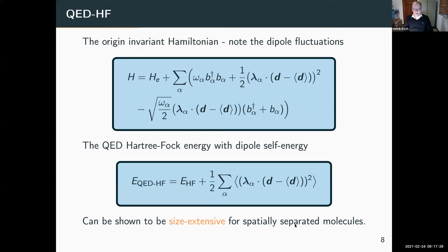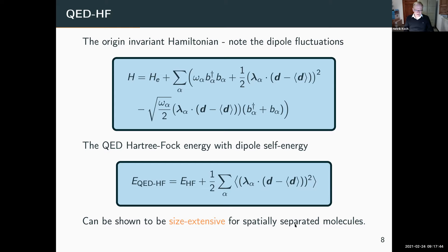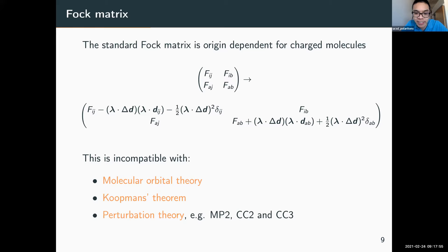Once we've defined the Hartree-Fock energy, we normally proceed to define a molecular orbital theory as a zero-order entry model. There is a question in the chat from Eric Fisher: does the QED Hartree-Fock Hamiltonian depend on the reference structure of the molecule through the nuclear contribution of the dipole moment? No — this is the Born-Oppenheimer Hamiltonian. It is normal to include the nuclear dipole contribution; there is a separate Hamiltonian for the motion of the nuclei.